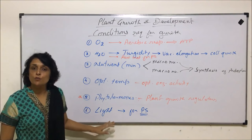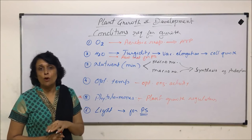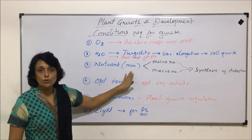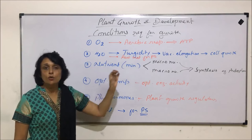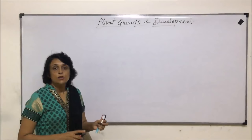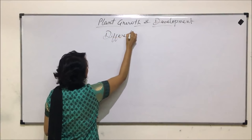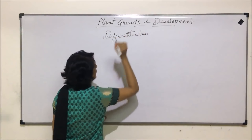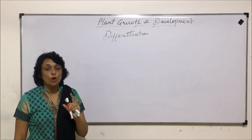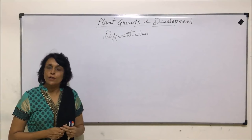Now let us talk about one more important thing, which is called differentiation. The plant cell grows, it divides, it grows, and then it gets differentiated. Differentiation is a process in which the cell which has been synthesized and has grown to its full size now becomes specialized for a particular function.